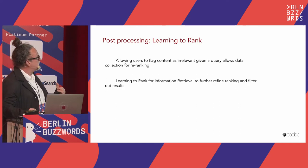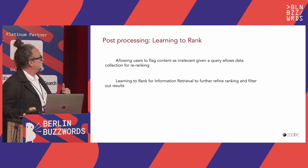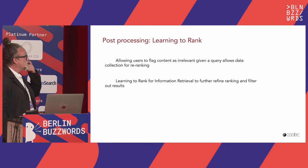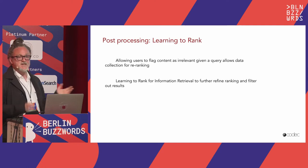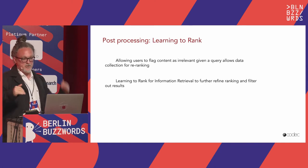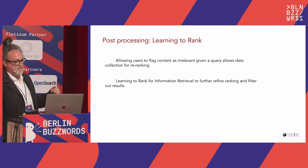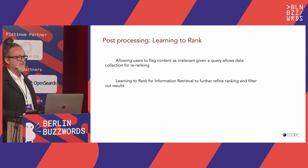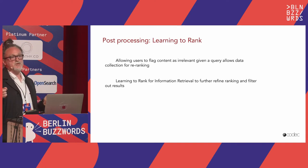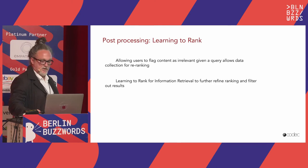Another thing to consider is allowing users to flag content as relevant, and then using this additional signal with a re-ranking model. There's a rich information retrieval and learning-to-rank literature on this. At the end of the day, you need a model that takes the query representation and something returned from the backend to produce a score between 0 and 1, which you can use for ranking or thresholding.